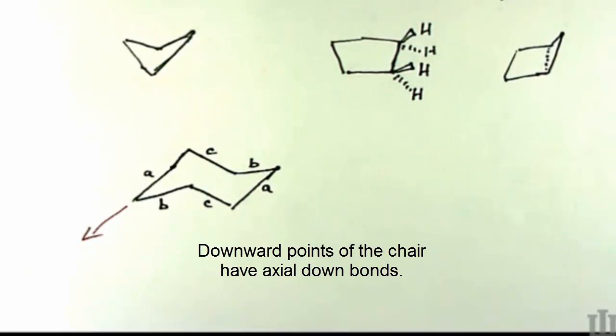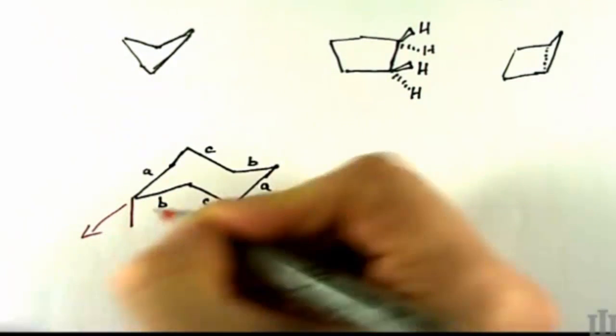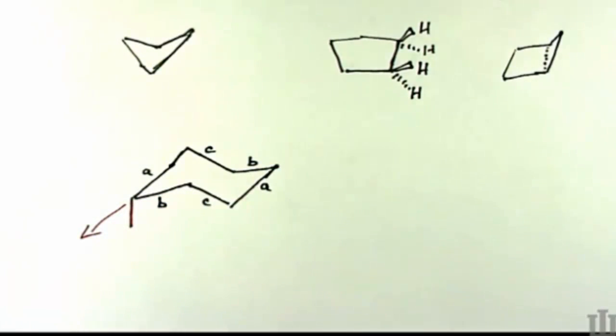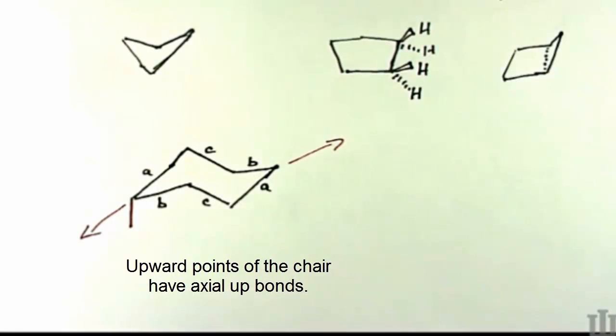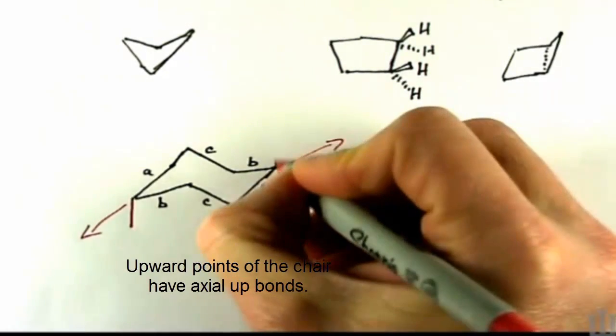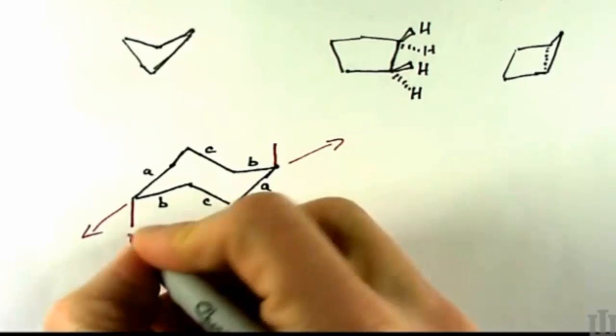So those angles can help you see where you should put your axial bonds. So since that's pointing down, I'm going to draw my axial bond straight down from that carbon. The one in the opposite corner is pointing generally up, I'm going to put the axial bond here, pointing straight up. And if this is cyclohexane, I'll draw in the hydrogens.